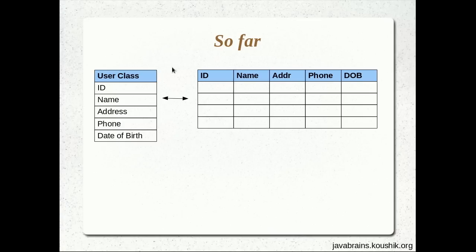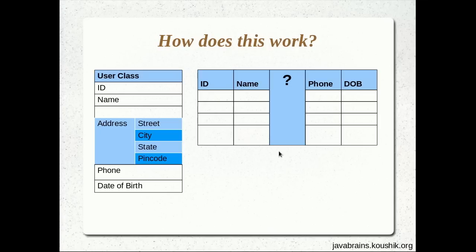The first scenario we're going to take is this: we will have a User class, and the User class, instead of having an address string, will have an address object. We'll write a separate Address class, and the Address class will have street, city, state, and pin code. Our User class will then have an instance of this Address object instead of a simple string.